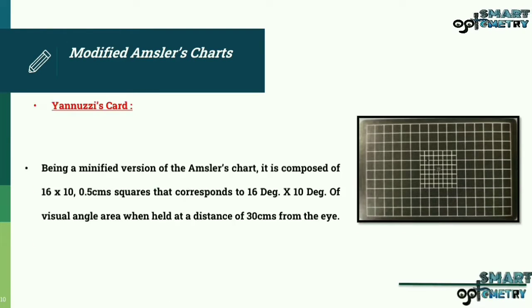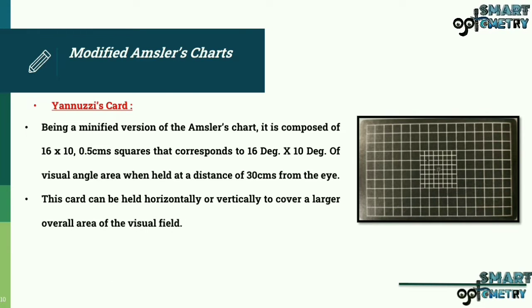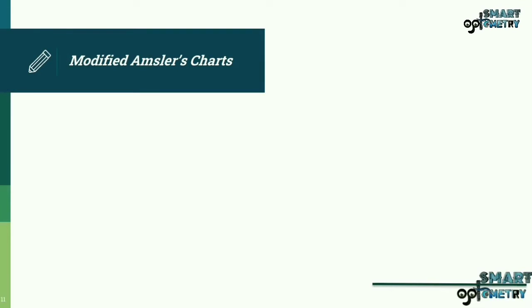Let's look at the modified Amsler's chart. Being a minified version of the Amsler's chart, it is composed of an area of 16 cm by 10 cm consisting of 0.5 cm squares that correspond to 16 degrees by 10 degrees area of the visual field when held at a distance of 30 cm from the eye. This chart can be held horizontally or vertically to cover a larger overall area of the visual field. This chart is of the size of a credit card and is popular for its convenience, portability and relatively high sensitivity to visual disturbance corresponding to that in the macular region. Here you can see the Unusis card of the area of 16 cm by 10 cm consisting of 0.5 cm squares that correspond to 16 degrees by 10 degrees area of the visual field when held at 30 cm from the eye.